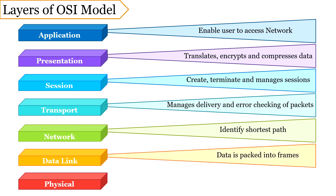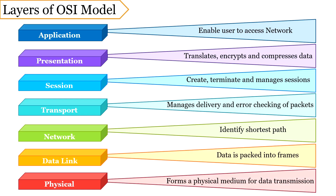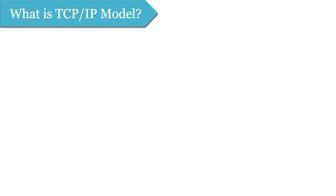Next is the data link layer — it is responsible for encapsulating the data received from the network layer into frames. And the last is the physical layer, which is responsible for transmitting bits over a medium and for providing mechanical and electrical specifications.